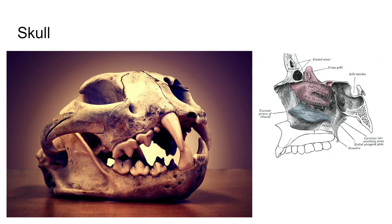The mammalian skull has two occipital condyles — these are the connection points in the back of the skull. They're called occipital because that occipital portion of our brain is also in the rear. They have a secondary palate, and this secondary palate separates our nasal passages from our mouth, which allows us to eat and breathe at the same time.